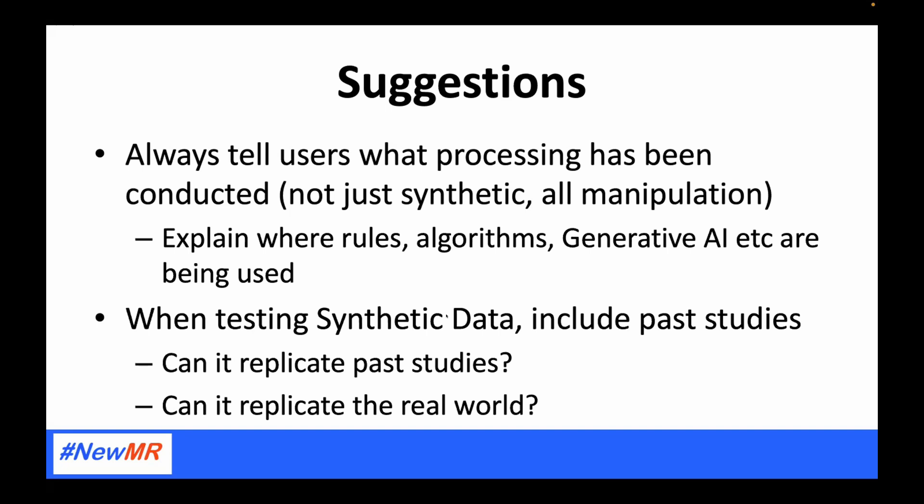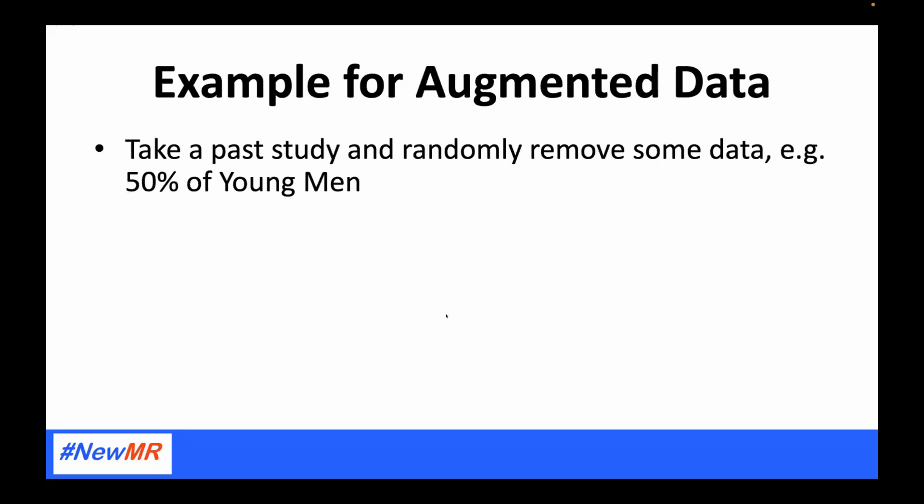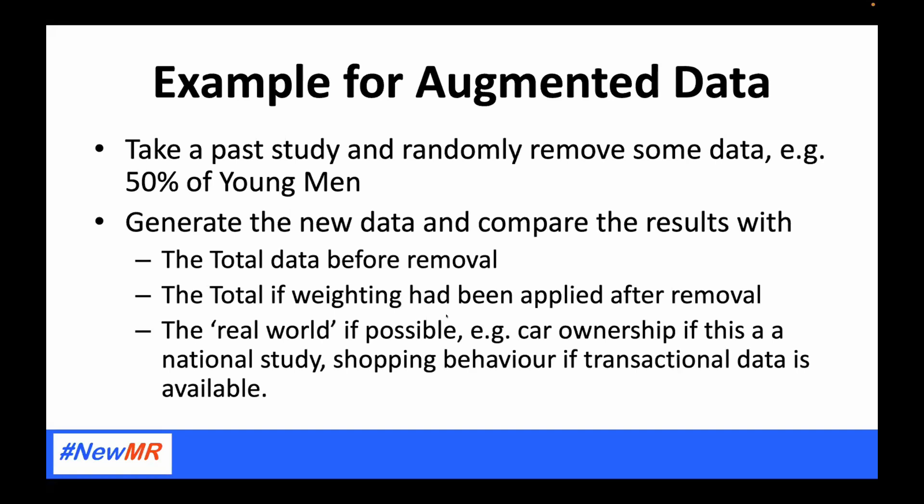Also test whether it can replicate the real world, because we don't want to just replicate survey data or qualitative data — we want a better forecast of what's happening in the real world. For example, in the UK we know how many people have a driving license, own a car, or have a passport. If you include questions like that, you can check whether the survey data or the synthetic data was closer to the real-world data. For augmented data testing: take a past study, randomly remove some data — I removed 50% of the young men — generate the new data, then compare it with the total before data was removed, and also compare with what weighting alone would have given you.